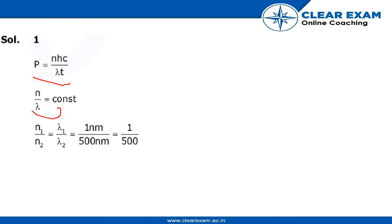Now we would find the ratio between them. So n1 by n2 would be equal to lambda 1 by lambda 2. As there is a difference of 500, the ratio would be 1 to 500. That's it.